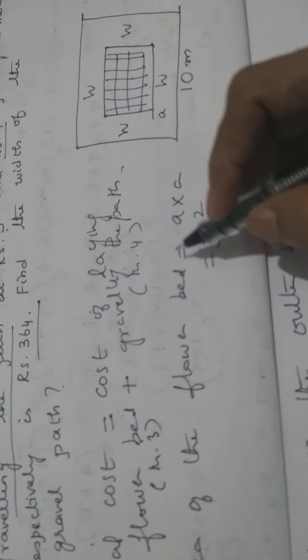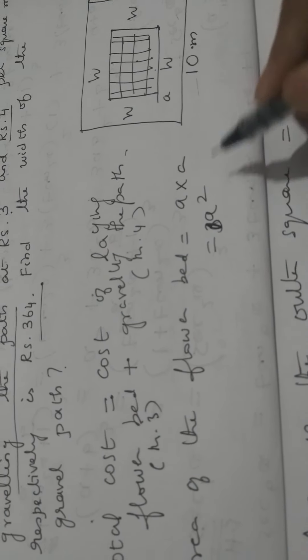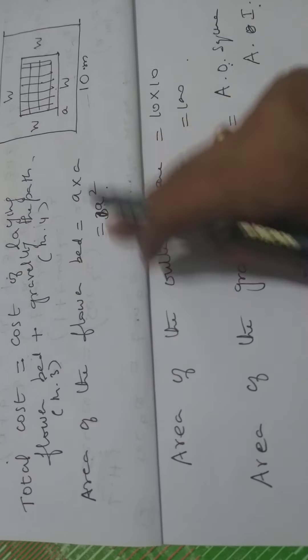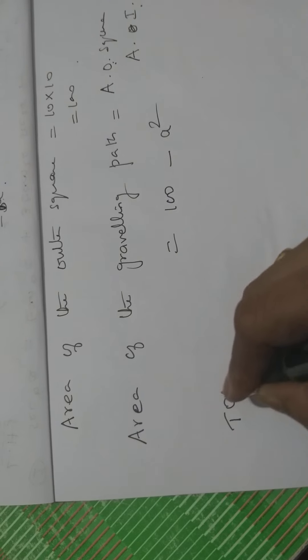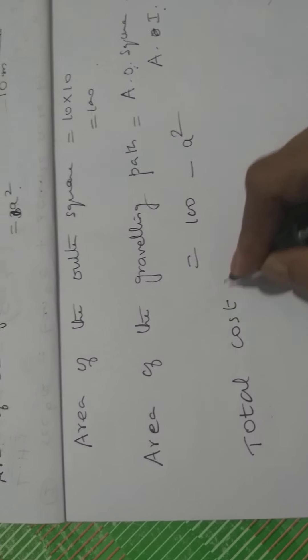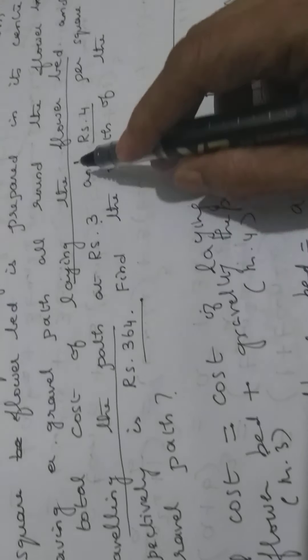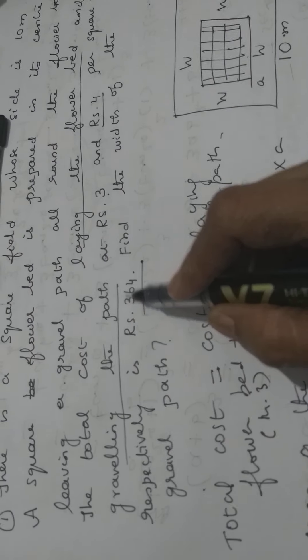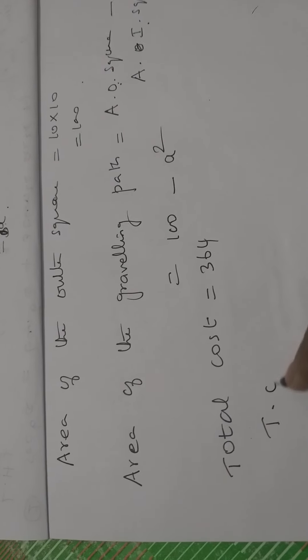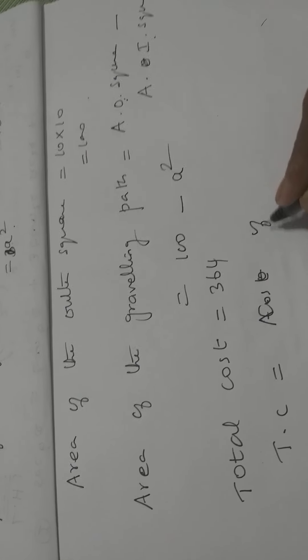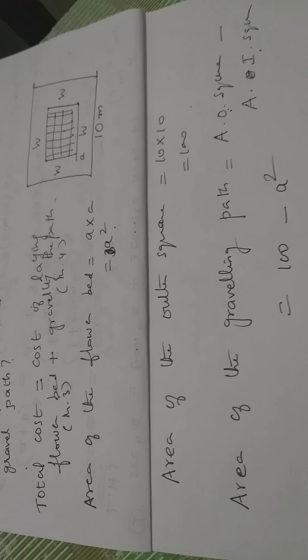What is given here — the cost is given. Just leave it as A squared; the area of the floor bed is A squared. The graveling path rate is ₹4 per square meter. The total cost is given as 364. The area of the flower bed at ₹3 per square meter gives the cost of the flower bed.